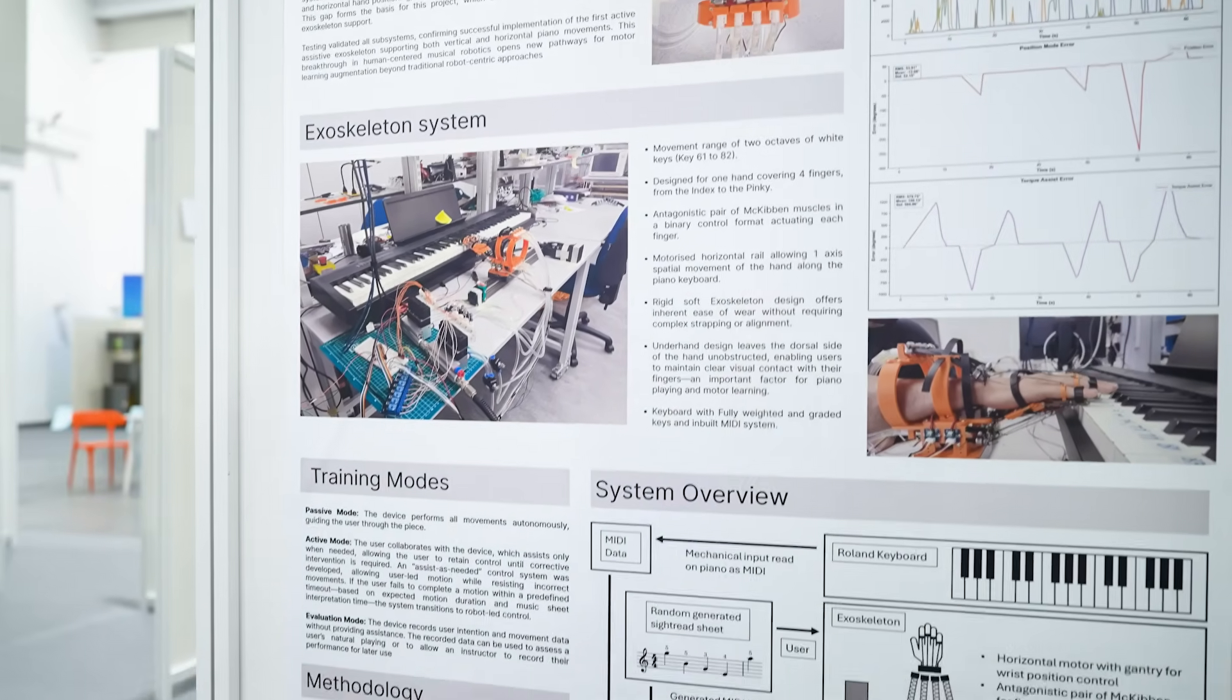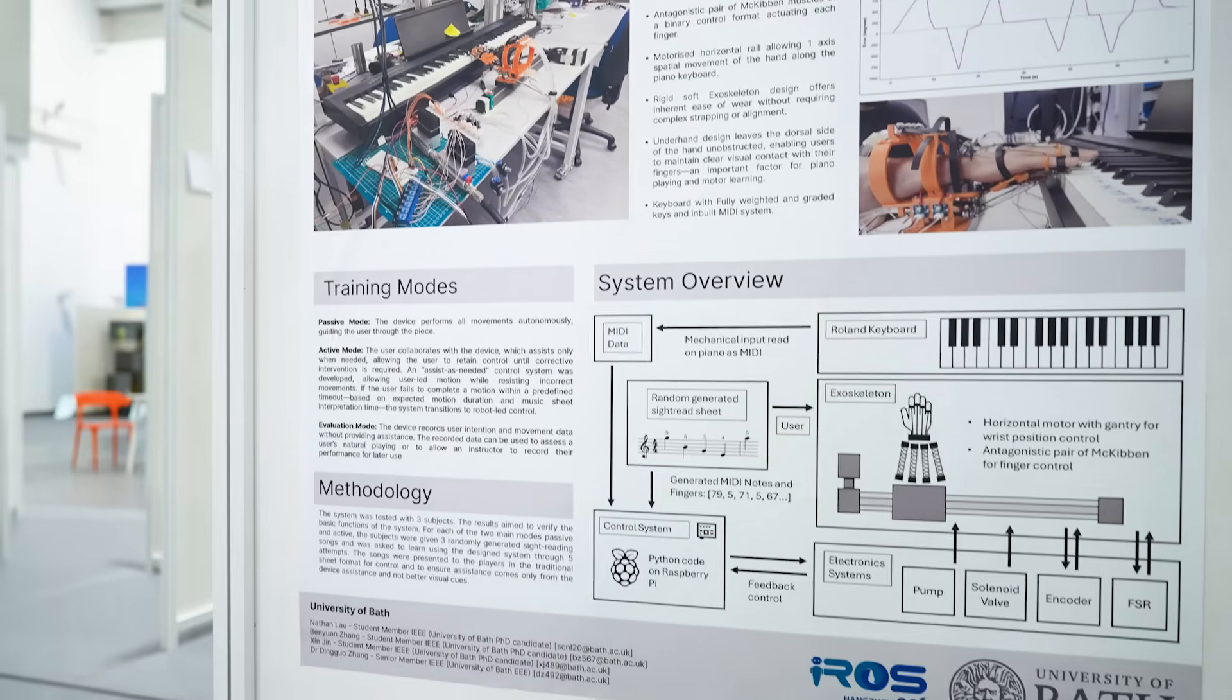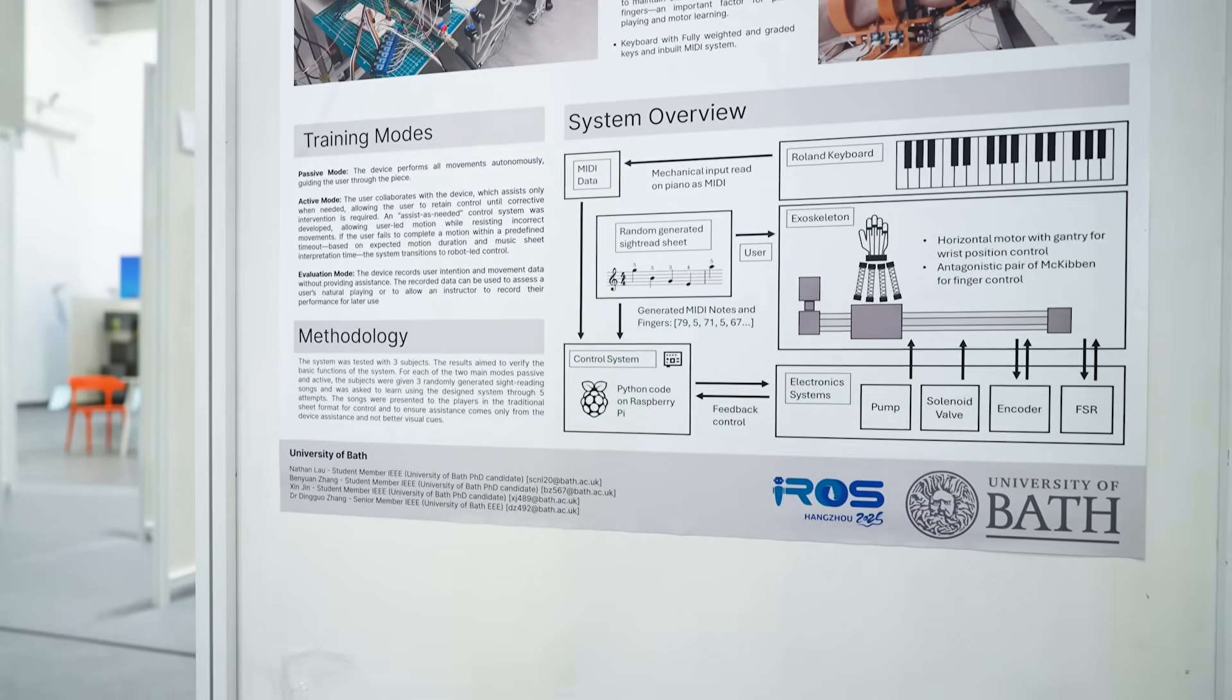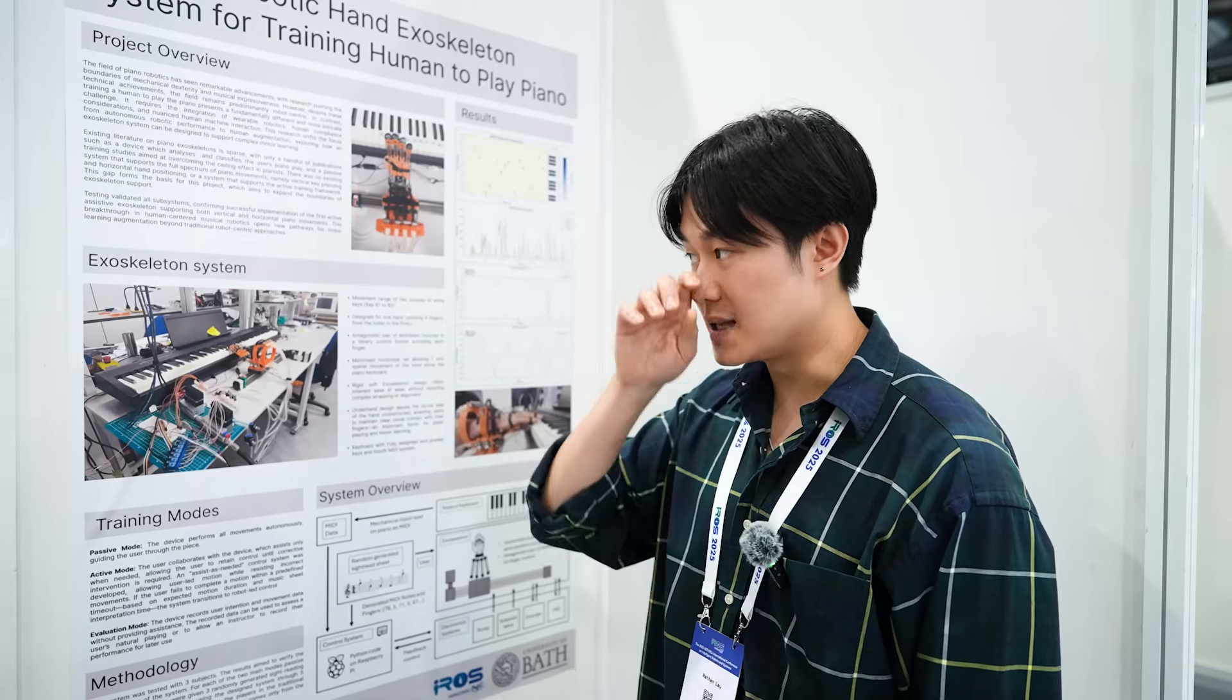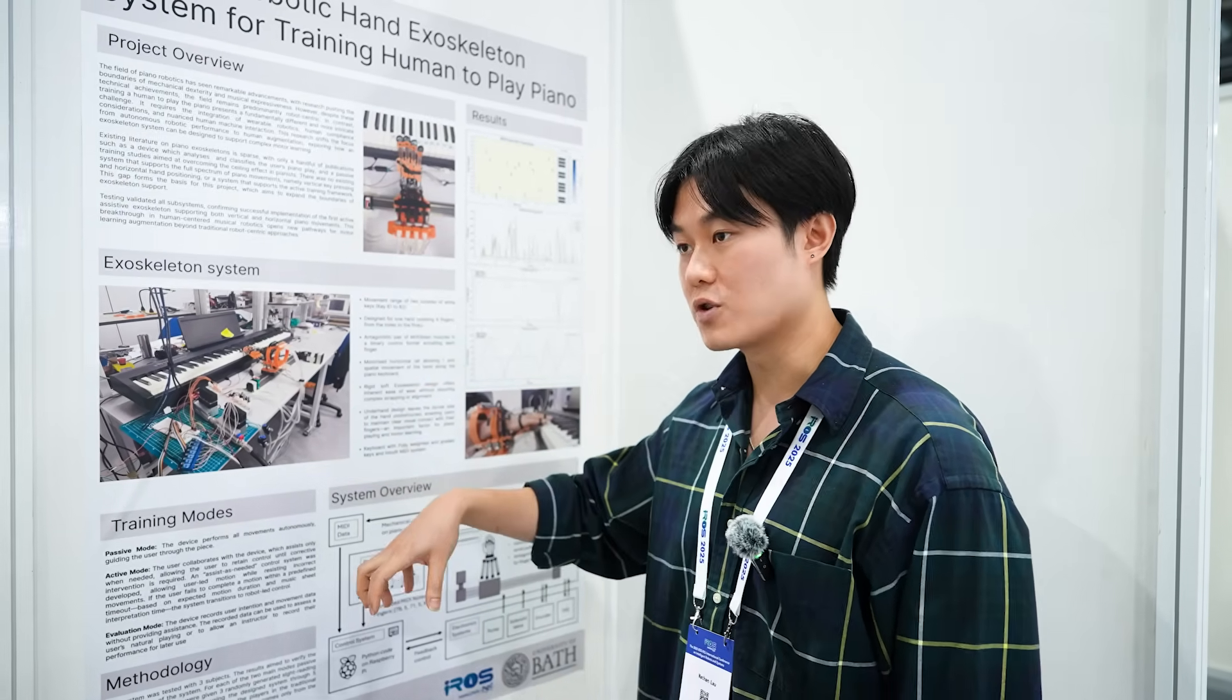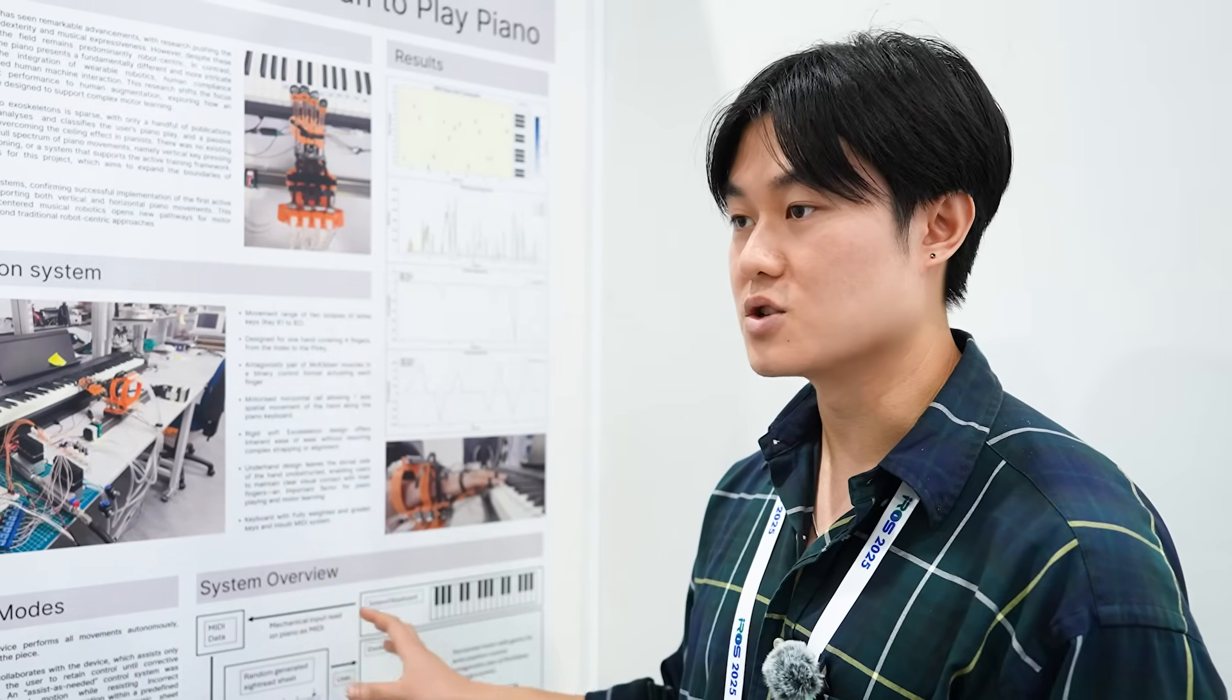When you're playing well, it won't do anything, and if you're playing wrong, it will correct you. The unique part is assist-as-needed control, which will basically assist you only when you need it. So instead of training and then seeing whether you got it, it will respond to your intentions. So a bit of embodied intelligence for this as well.